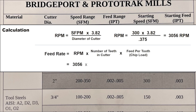3056 multiplied by 4 — the number of teeth — multiplied by the starting chip load of .002 equals 24.44 inches per minute.